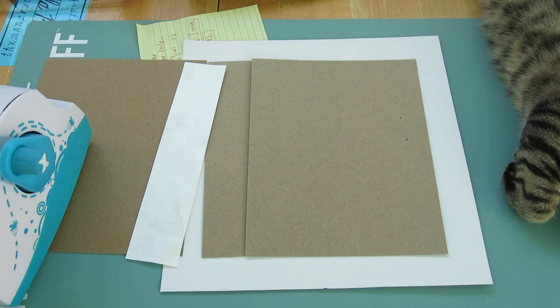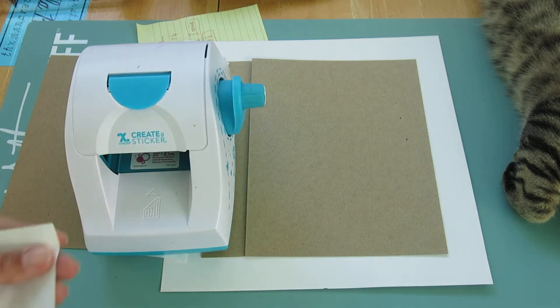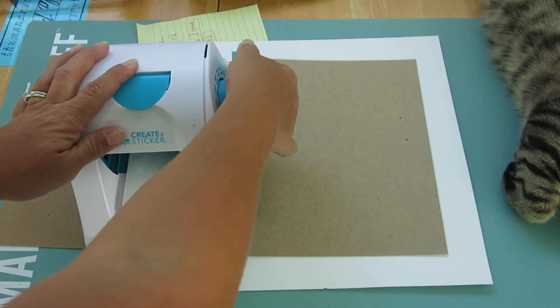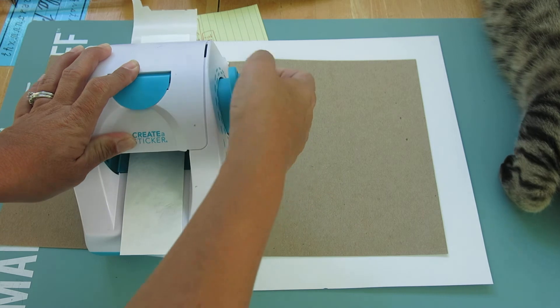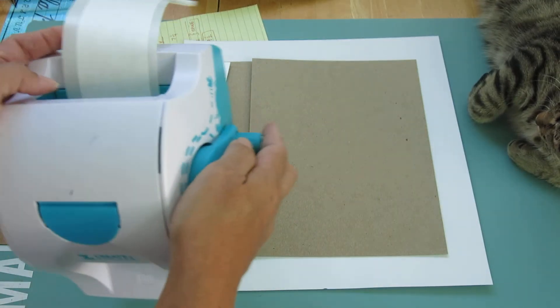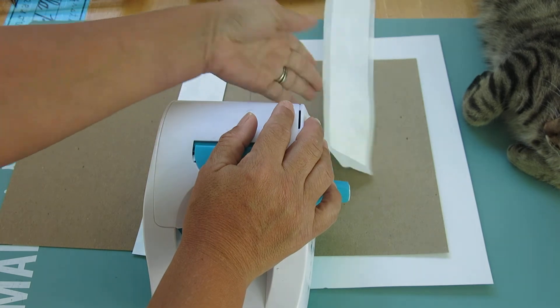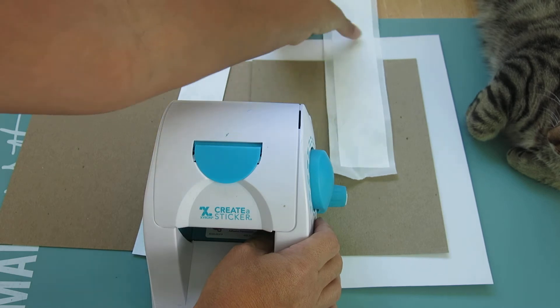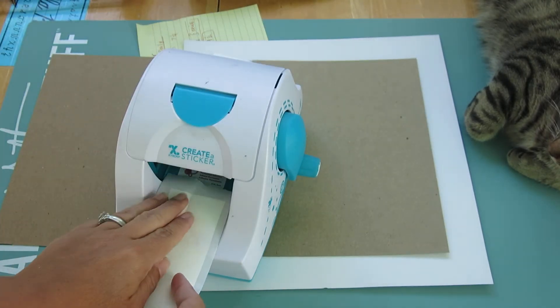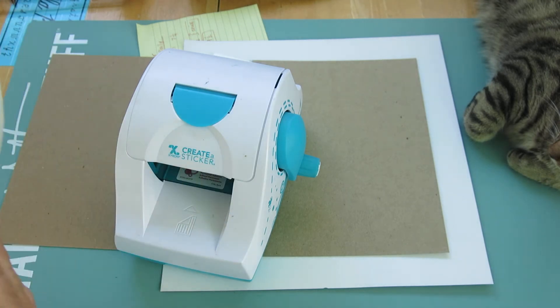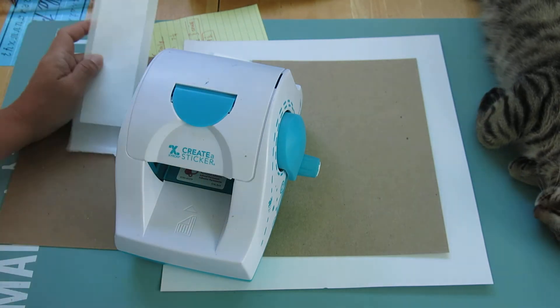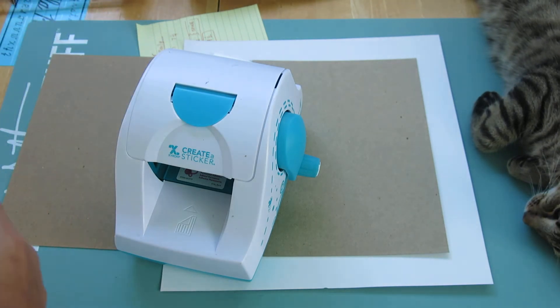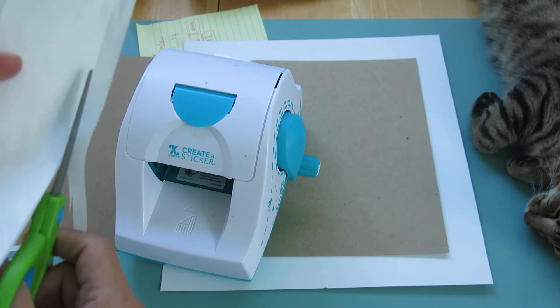I'm going to try to use my Xyron create-a-sticker because it's so much easier. The reason why it's easier is because I don't have to peel back the tape. So essentially now I've got another, in fact I could make my own. Watch this, if I trim this I could just make my own double-sided tape. That's a freebie here, I was not planning on showing you this but why not.